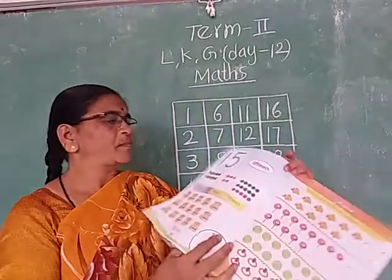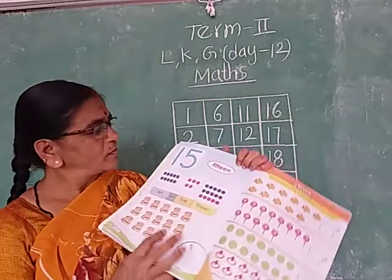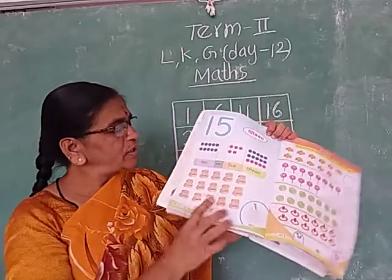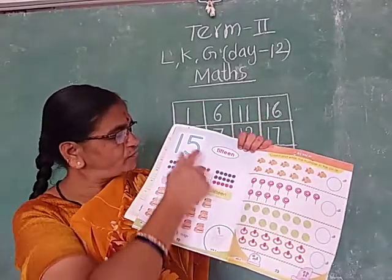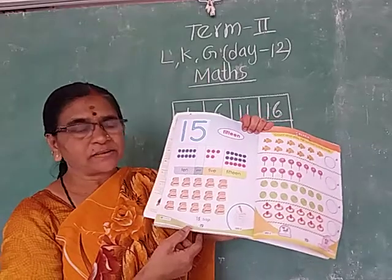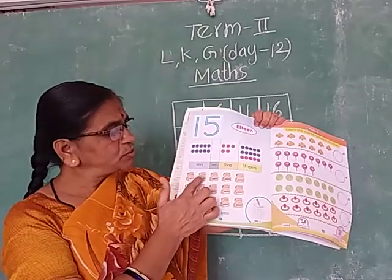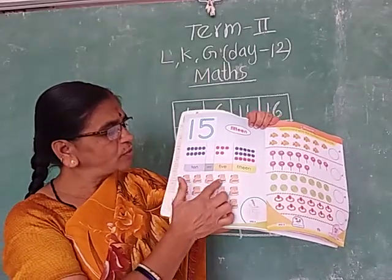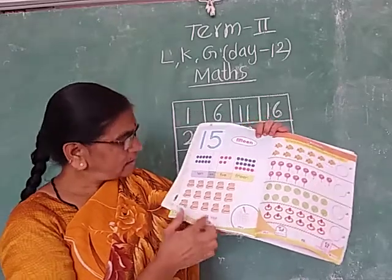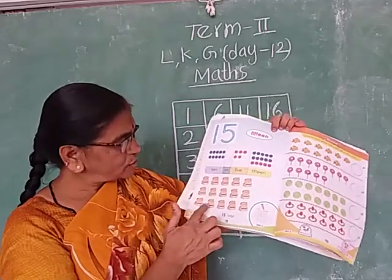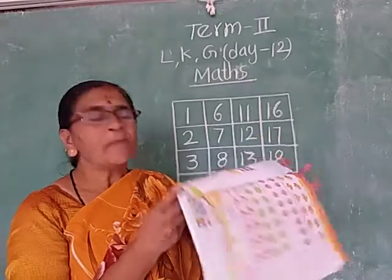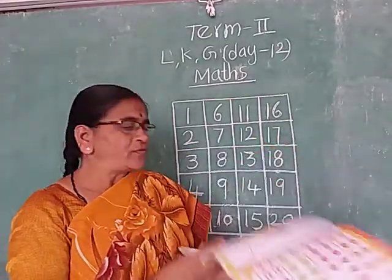Next number 15. 10 and 5 makes 15. What are these here? Bags. Count the bags: 1, 2, 3, 4, 5, 6, 7, 8, 9, 10, 11, 12, 13, 14, 15 — 15 bags. 10 and 5 makes 15.